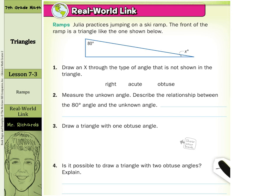Our real world link starts us off with ramps. Julia practices jumping on a ski ramp. The front of the ramp is a triangle like the one shown below. Draw an X through the type of angle that is not shown in the triangle. Right, acute, or obtuse.